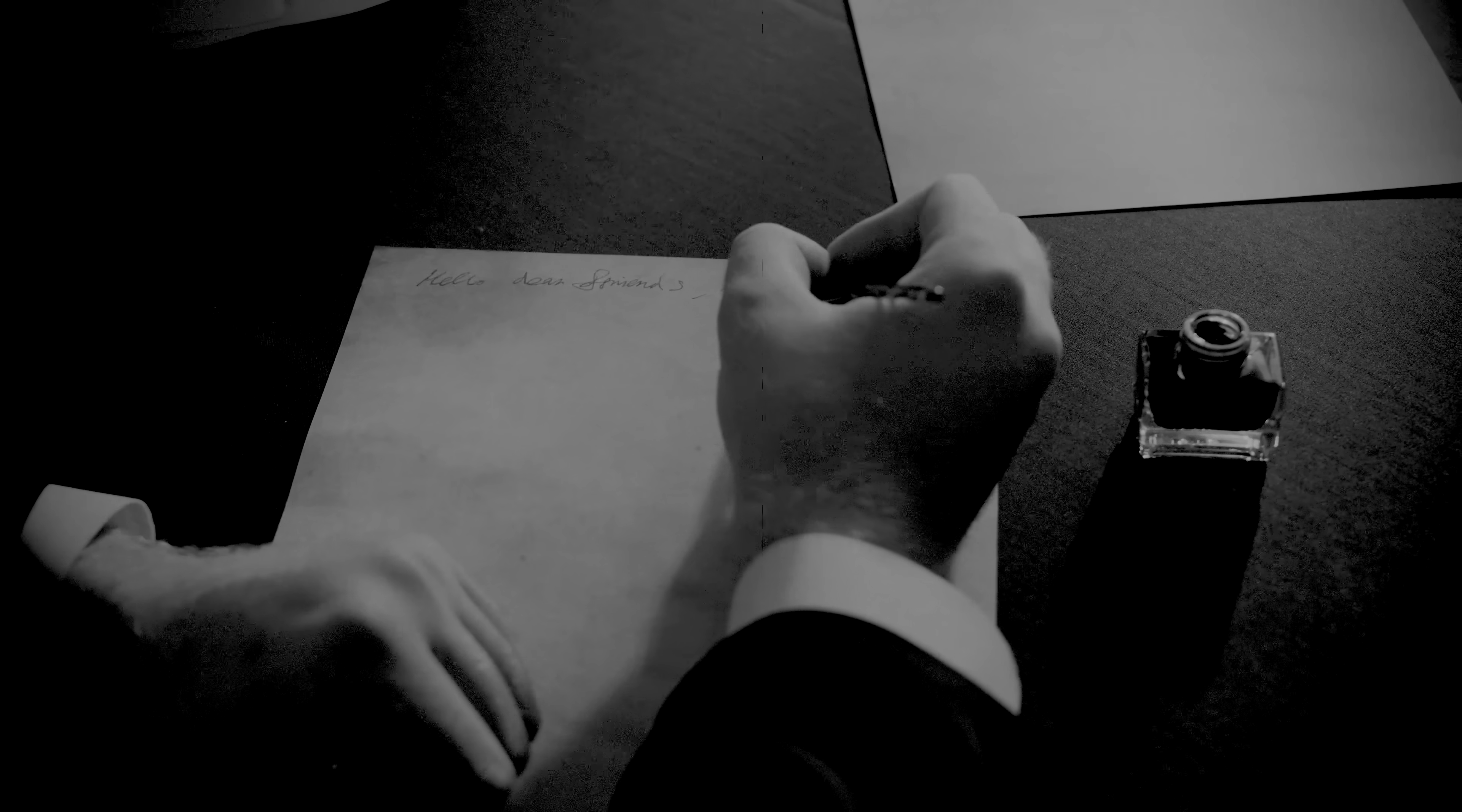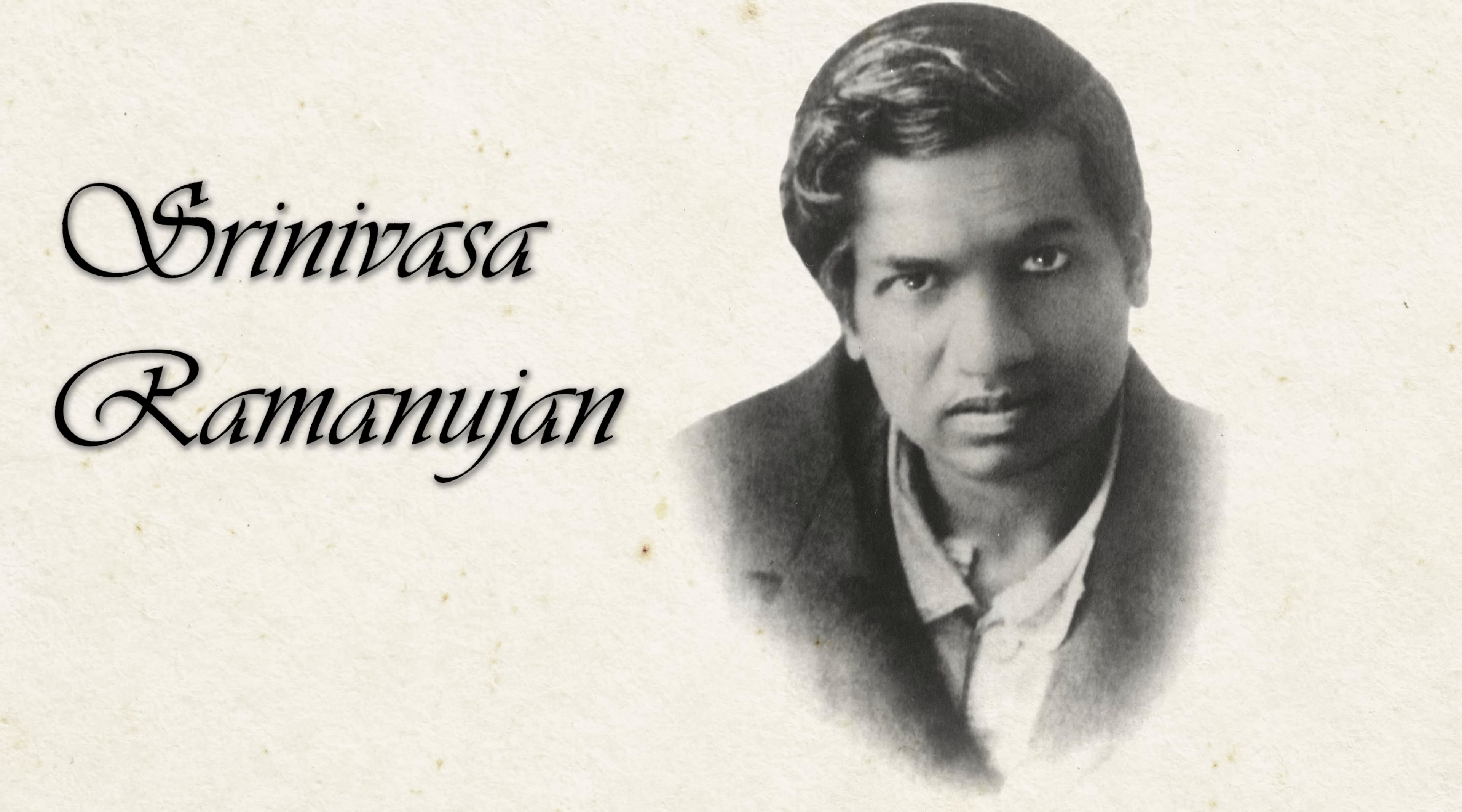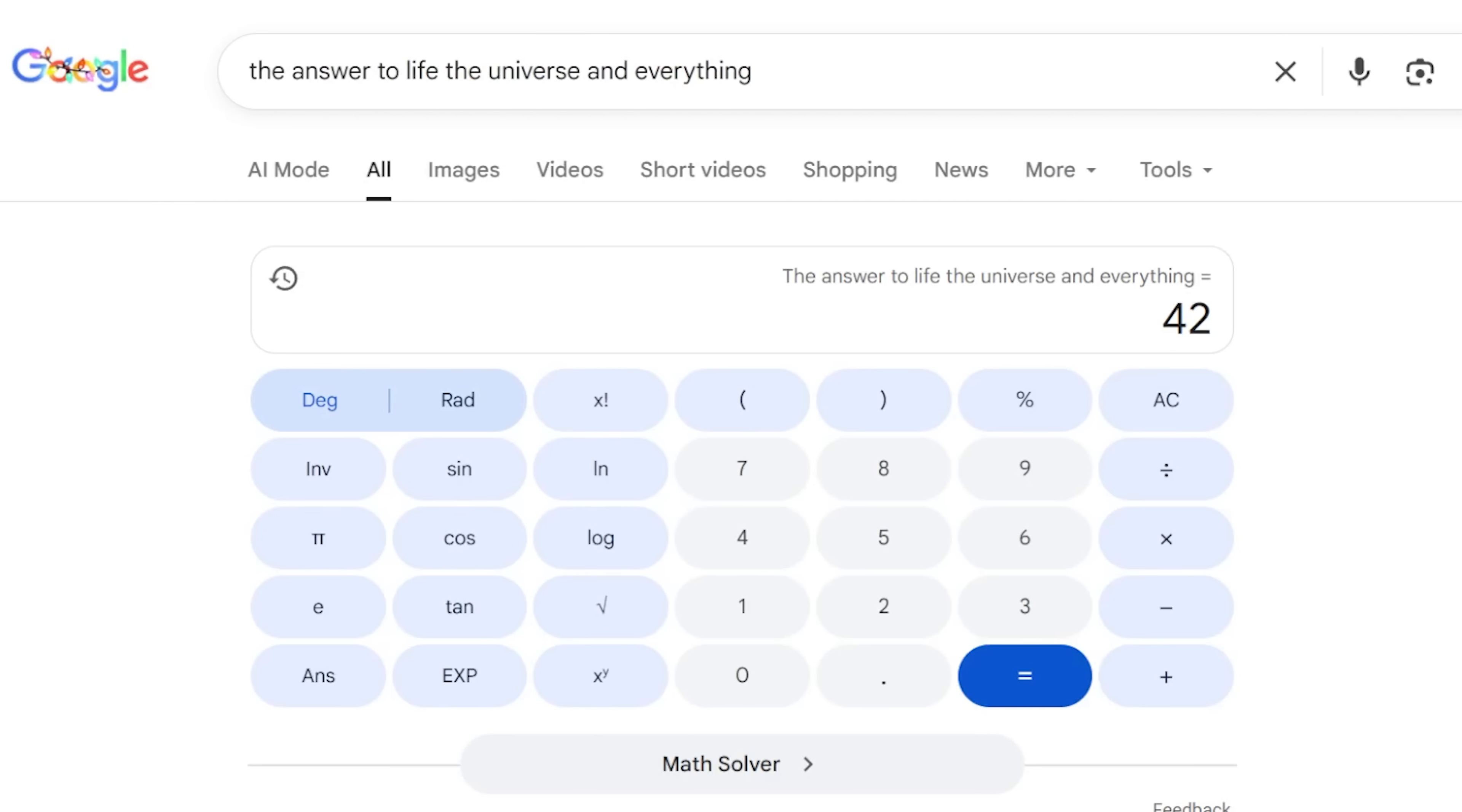In January 1913, an obscure self-taught mathematician named Srinivasa Ramanujan sent a letter to the Cambridge mathematician G.H. Hardy that was filled with hundreds of formulas he had just discovered. Among them was the astonishing statement that 1 plus 2 plus 3 and so on to infinity equals negative 1/12th. But why would he say something so absurd? That's almost like in the Hitchhiker's Guide to the Galaxy when the answer to the ultimate question of life, the universe, and everything is 42.